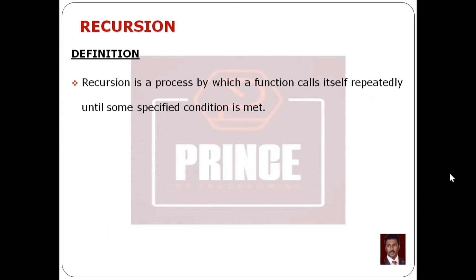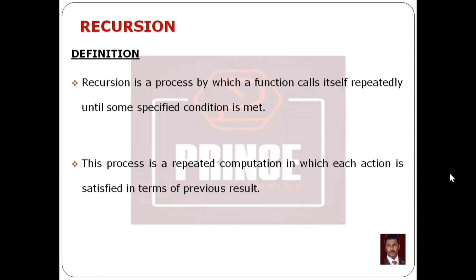When it comes to a particular condition, the recursive process will stop. This process is a repeated computation in which each action is satisfied in terms of the previous result. In each step, there will be a result based on the previous step, and we use that result in the current step. This process is repeated and executed until a particular condition is met, then it stops. This concept is called recursion.